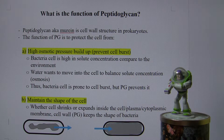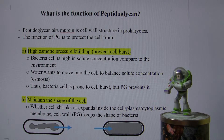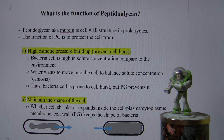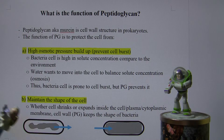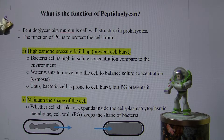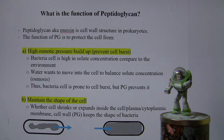What is the function of peptidoglycan? Peptidoglycan is known as murein and it is a cell wall structure in prokaryotes. They are different in gram-negative and gram-positive. In gram-positive, peptidoglycan is either multilayer or trilayer, commonly.